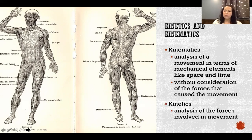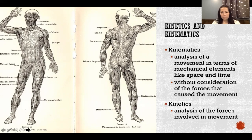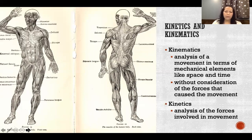Kinetics is where we look at the forces — that's analysis of the forces involved in a movement. When we get into the kinetics of an action, we're analyzing how much force each muscle produced and in what order they produced those forces. We're looking at gravity, friction, any other forces acting on the system. So kinematics is analysis of movement in space and time; kinetics is analysis of the forces that caused or are caused by the movement.